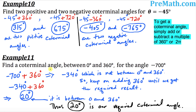In example 11, we've been asked to find the coterminal angle for negative 700 degrees that must be between 0 and 360 degrees. First, add 360: negative 700 plus 360 gives negative 340 degrees, which is not in the required range. Add 360 again: negative 340 plus 360 gives 20 degrees, which is indeed between 0 and 360. Thus, 20 degrees is the required coterminal angle.